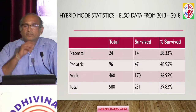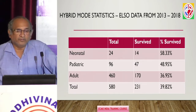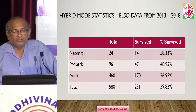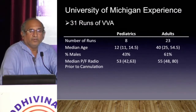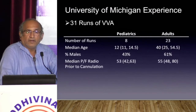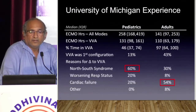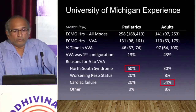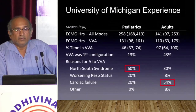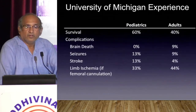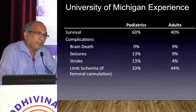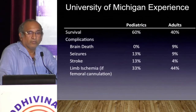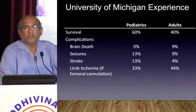Total data from 2013 to 2018 shows around 580 patients required hybrid ECMO with survival of around 40 percent. The University of Michigan published data on 31 patients on VV-A — 8 pediatric and 23 adults. The most common indication in pediatrics was north-south syndrome (60 percent of patients); in adults, it was right heart failure. Survival in pediatrics was 60 percent compared to 40 percent in adults — better in pediatrics because cardiac ECMO switched to VA-V survives better than VV ECMO switched to hybrid.